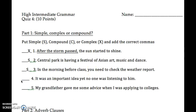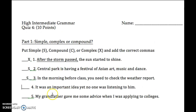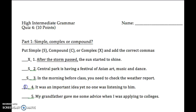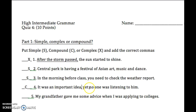Next one: 'It was an important idea, yet no one was listening to him.' When you see a FANBOY, you have to check: do I have a complete sentence on each side? 'It was an important idea' — yes, that's a complete sentence. 'No one was listening to him' — yes, that's a complete sentence. So that means we have compound. With compound sentences, you always put the comma before the FANBOY. Some people are still putting it after — be careful with that, easy mistake.